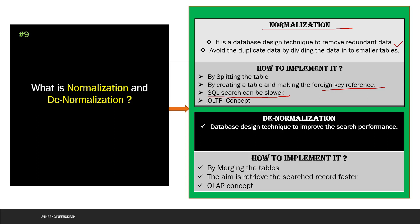OLTP deals with INSERT, UPDATE, and DELETE operations, while OLAP deals with only SELECT statements. Denormalization is the reverse — a technique to improve search performance by merging tables. For instance, merging the department and employee tables into a single employee table with both department_id and department_name allows searching from one table, making queries faster.